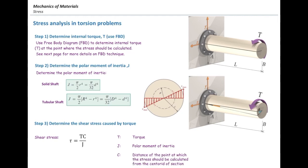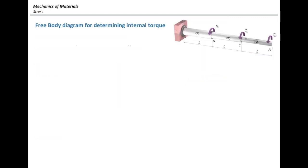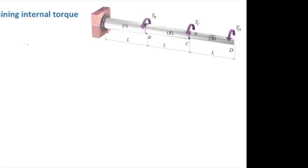Now let me talk about the free body diagram. Assume that we want to determine how much is the internal torque in this system. There are several steps. First, we need to cut the element at the section where we want to determine the internal torque. Assume that we want to determine the internal torque in shaft 1 — then I'm going to cut shaft 2 and consider the left part or right part.